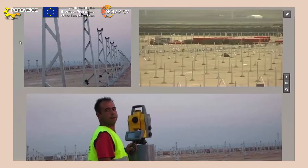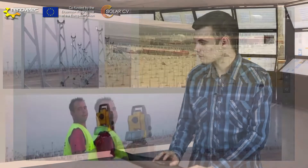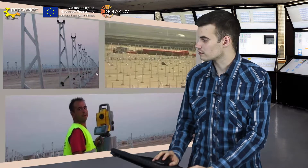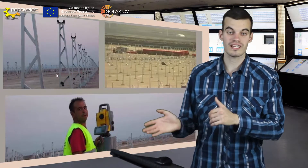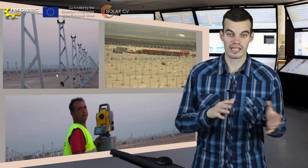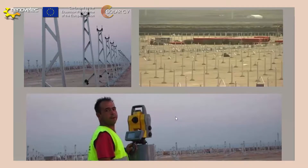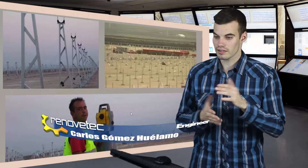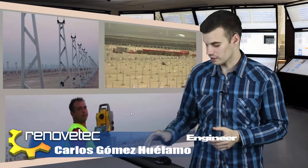Here we can see an example of pylons and piles on the surface where the solar field is going to be located. The operators in the solar field must ensure with topographic techniques that the requirements for the PT CSP plant are met, for example the inclination in the north-south line and the sun alignment.